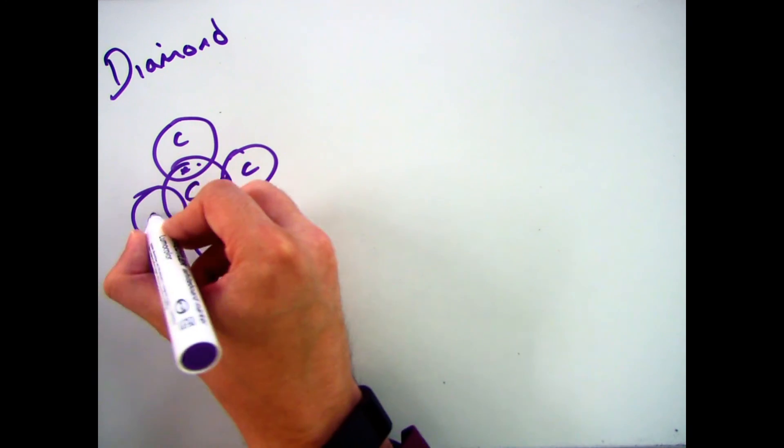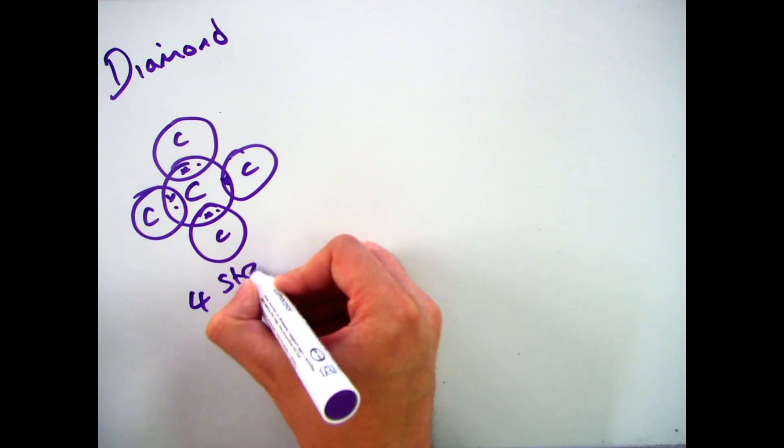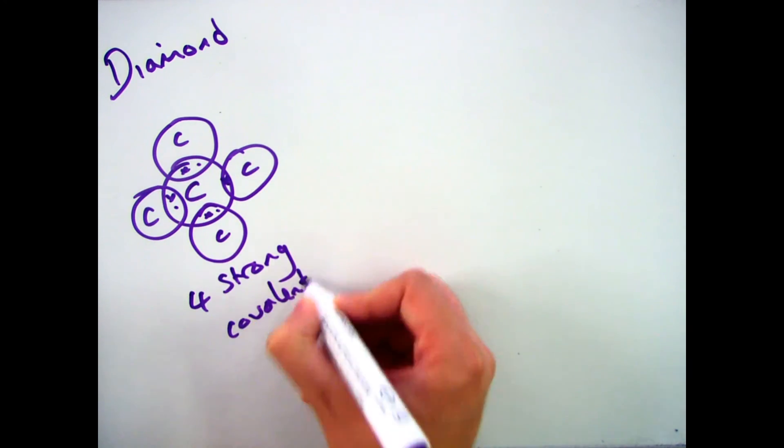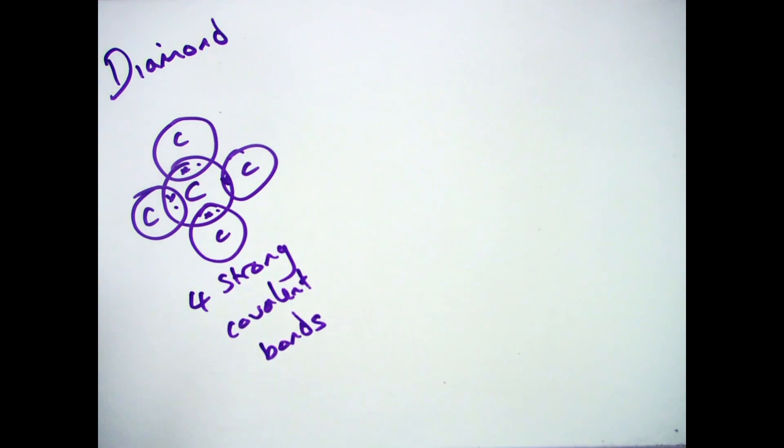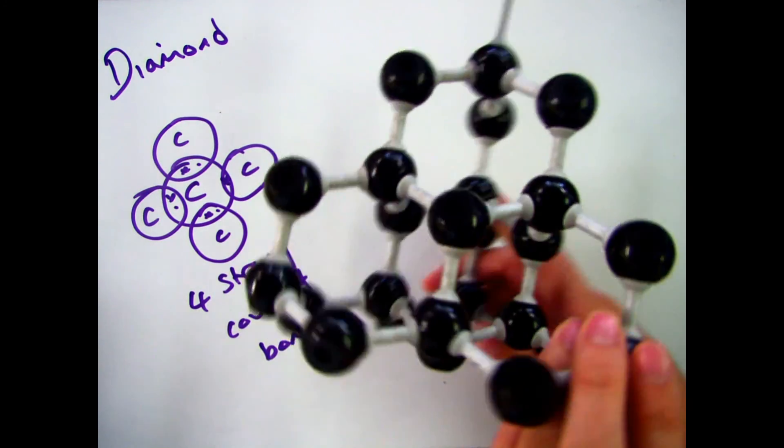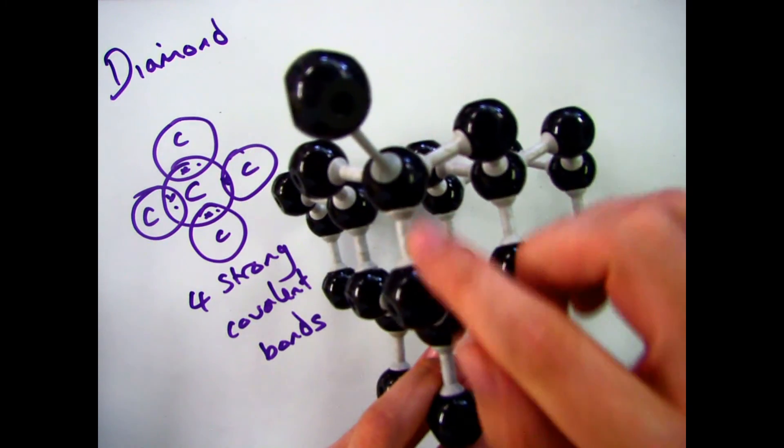What that means is they're both made up of carbon. So if we were to have a look at diamond here, you'll see that diamond is made up of four carbons surrounding the central one. And therefore every carbon atom has four strong covalent bonds.